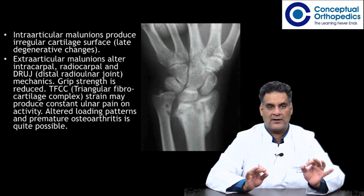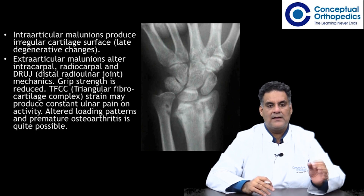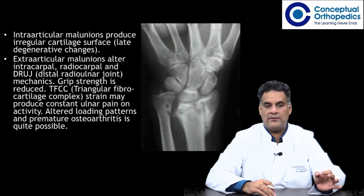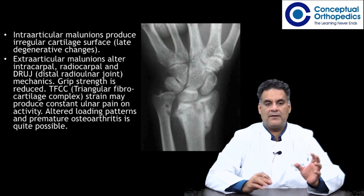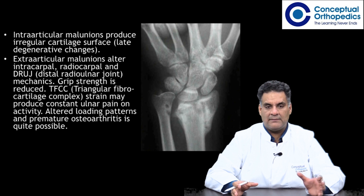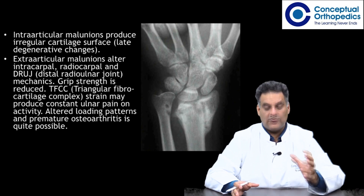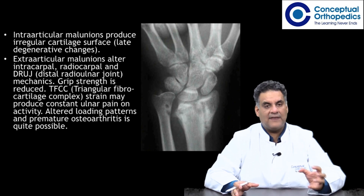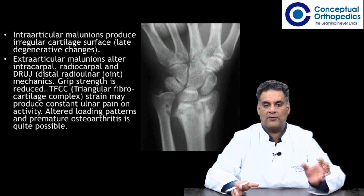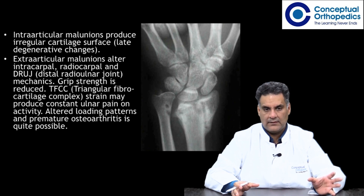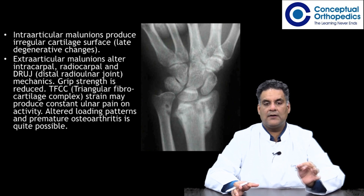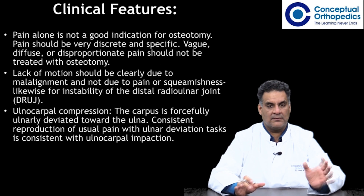Intra-articular malunion produces an irregular articular surface which can cause later arthrosis. Extra-articular malunion alters intracarpal, radiocarpal, and distal radioulnar joint mechanics. Grip strength is reduced. TFCC (triangular fibrocartilage complex) pain may produce constant ulnar pain on activity. Altered loading patterns and premature osteoarthritis are possible consequences.